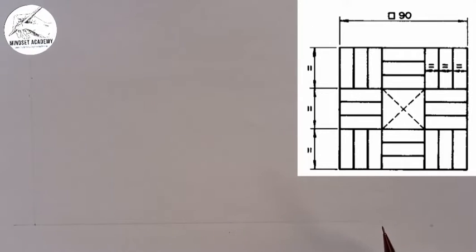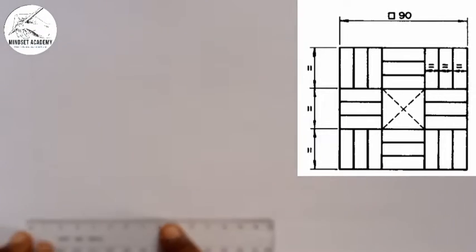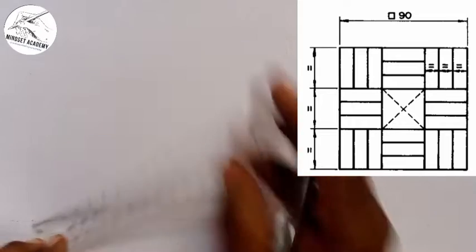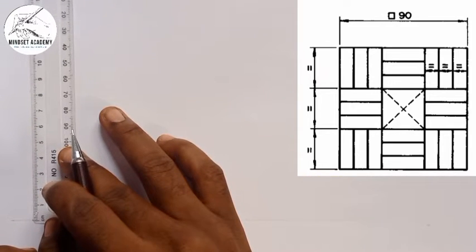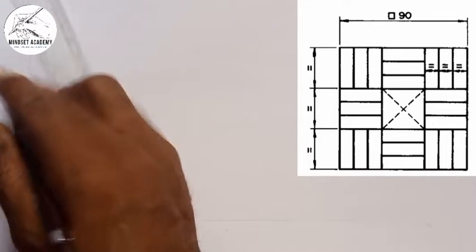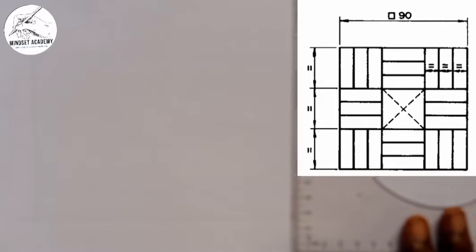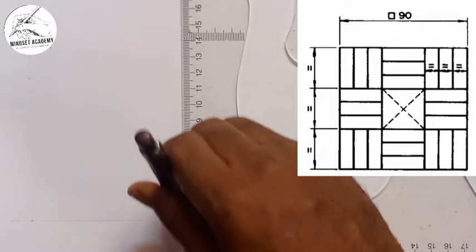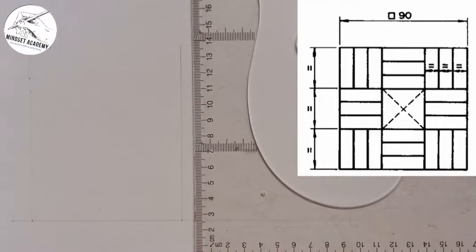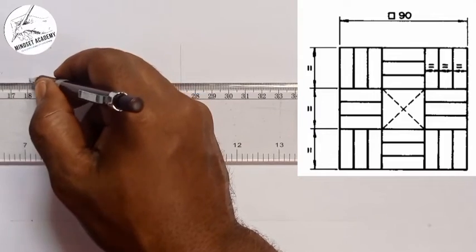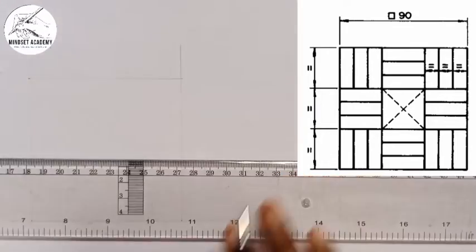I'll take my ruler and measure 90mm. From zero to 90, I'll mark that point. I'll take my T-square, move it to this point, and draw a line this way. I'll move it again to the next point and draw another line from this point.